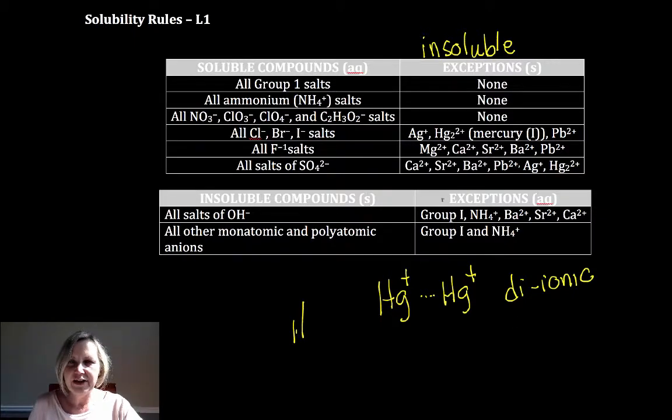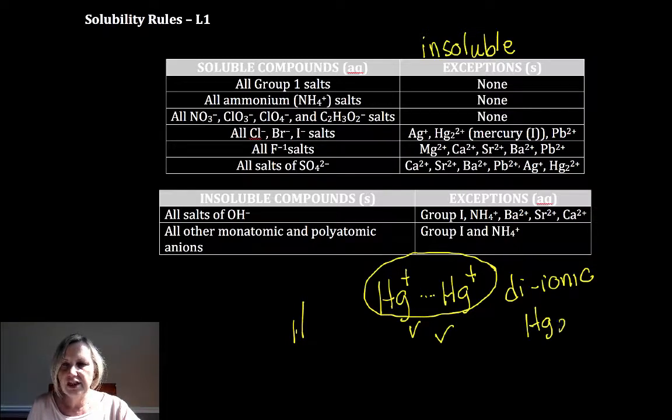So it's always Hg2 and since there are two positives, it's a total of two plus. So this combination of the two mercuries, each with a plus one, is written as Hg2 two plus. Okay,